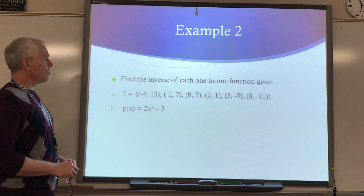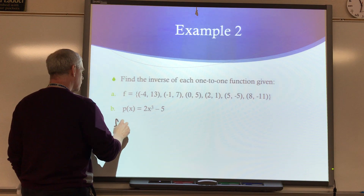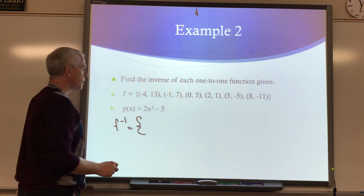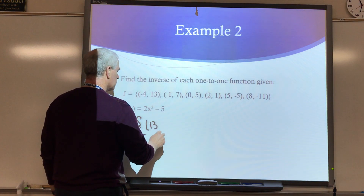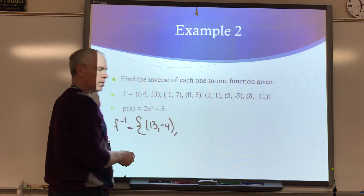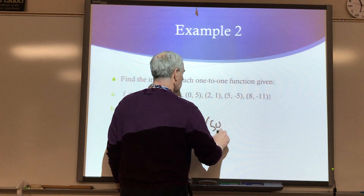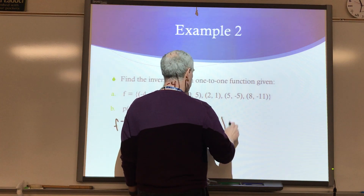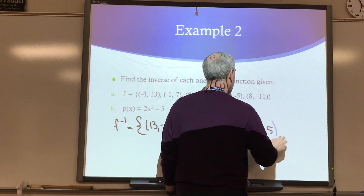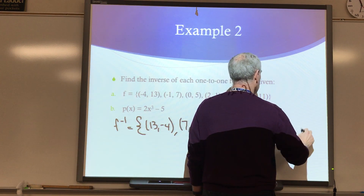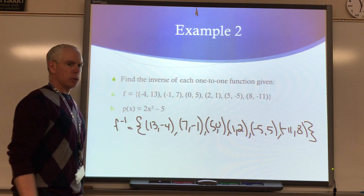Find the inverse of each one-to-one function given. For F inverse, we simply need to write the ordered pairs in the opposite order. So instead of negative 4, 13 — we've got 13, negative 4. And then 7, negative 1; 5, 0; 1, 2; negative 5, 5; and negative 11, 8. It's that simple.